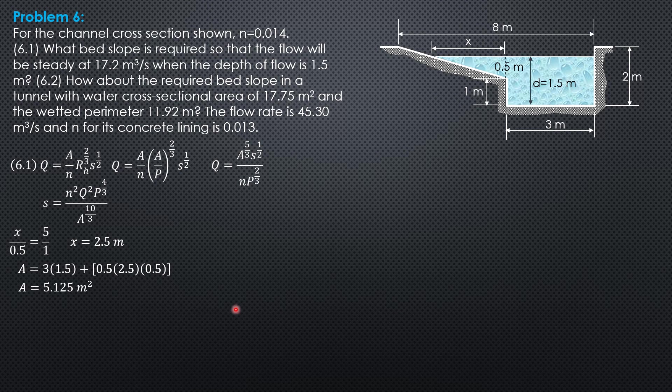The wetted perimeter beginning with this part is square root of 2.5 square plus 0.5 square plus 1 plus 3 plus 1.5. This is only 1.5, the wetted portion. So the wetted perimeter is 8.05 meters.